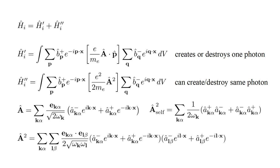This is the sum over all photon states k-alpha of one over two omega k, times creation operator, destruction operator, plus destruction operator, creation operator, for the k-alpha photon.